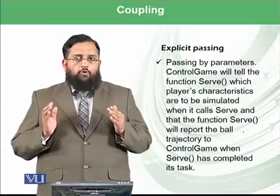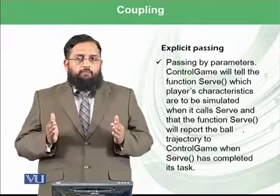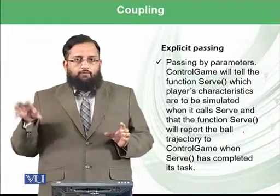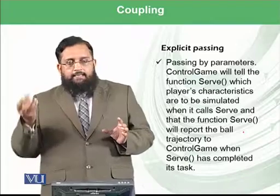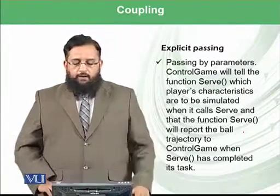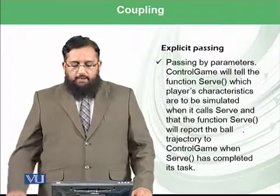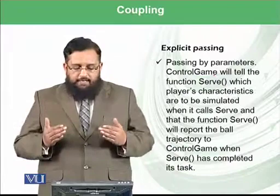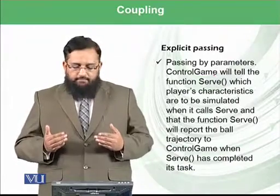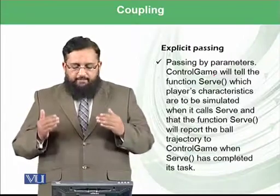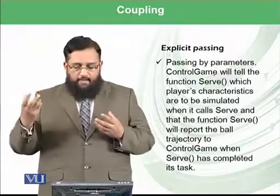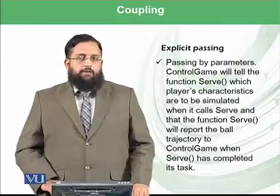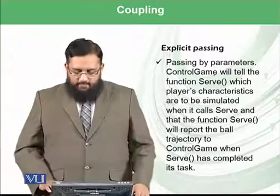There are two methods to handle data coupling. One method is explicit passing — a function makes all changes to variable X and then passes X to another function. For example, 'control game' will tell the 'serve' function which player's characteristics are to be simulated, and when it calls the serve function, the serve function will report the ball trajectory back to 'control game' once it has completed its task. This passing of data between modules is known as explicit passing, or passing by parameter.